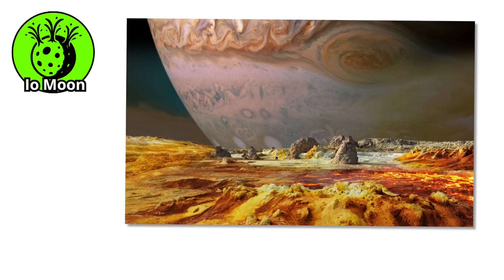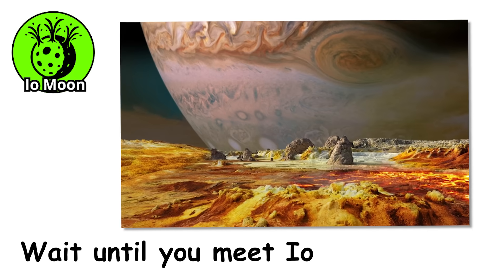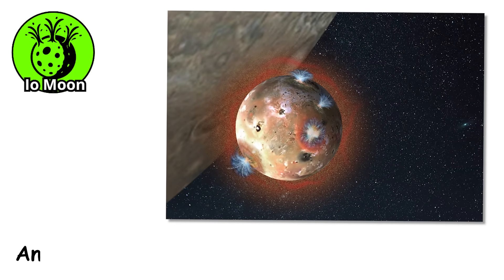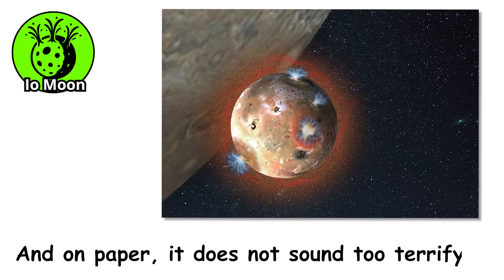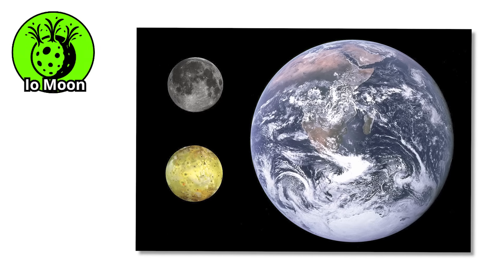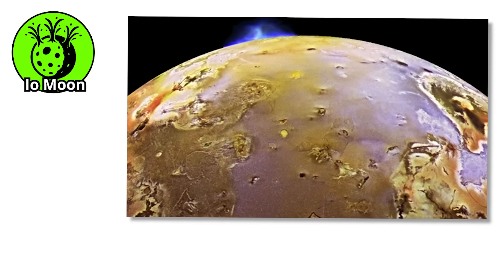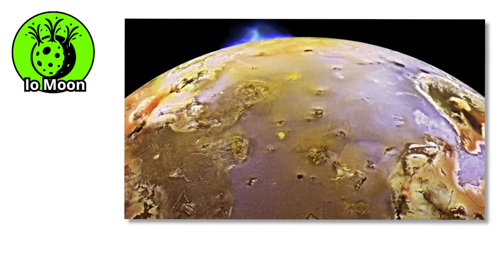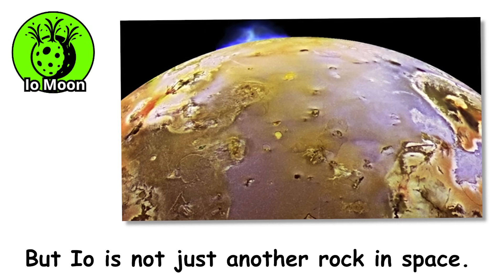Number 10. If you thought Venus was intense, wait until you meet Io. This little moon orbits Jupiter, and on paper, it does not sound too terrifying. It is about the same size as Earth's moon, has no atmosphere, and is just one of many moons orbiting the gas giant. But Io is not just another rock in space. It is the most volcanically active place in the entire solar system.